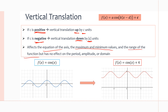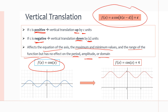This transformation affects the equation of the axis, the maximum and minimum values, and the range of the function, because we are moving the graph either up or down. It will have no effect on period, amplitude, or domain, because the domain is still x is an element of all real numbers, the amplitude stays the same since we're not stretching or compressing the graph, and the period stays the same since there's no horizontal change. All these transformations can be done to the sine graph as well.